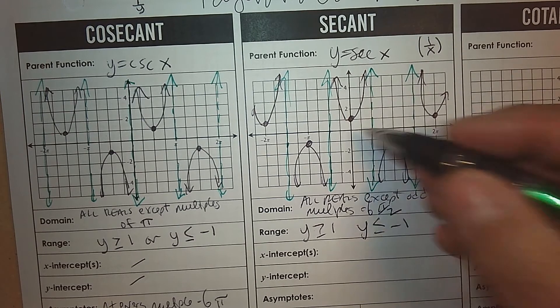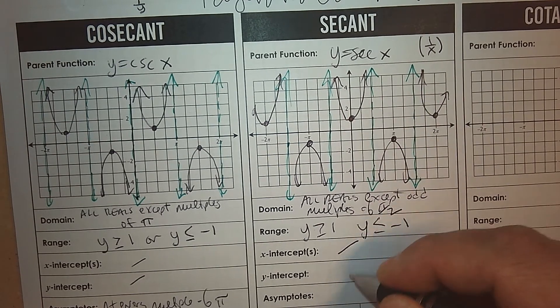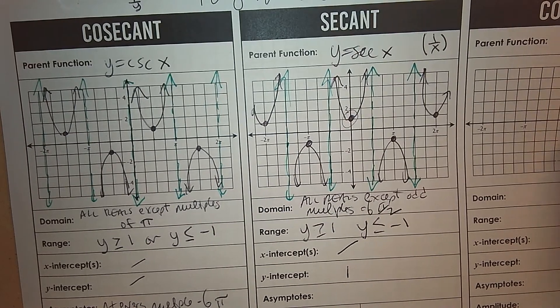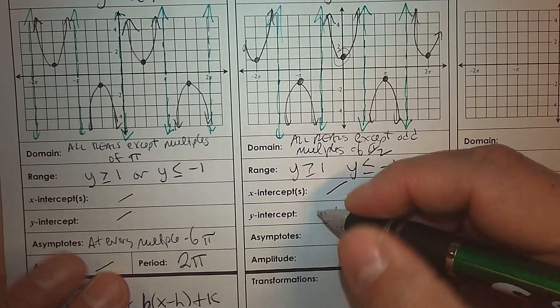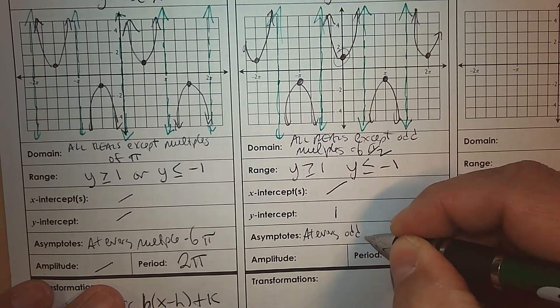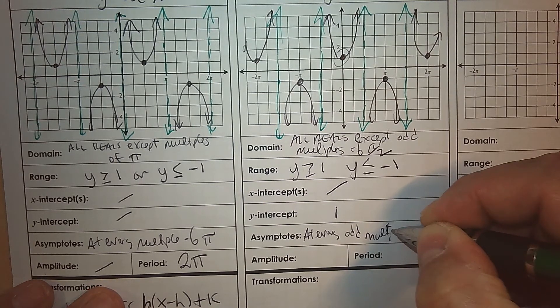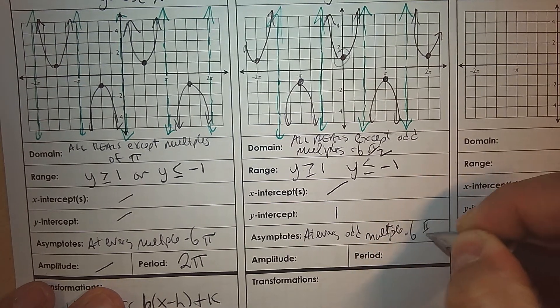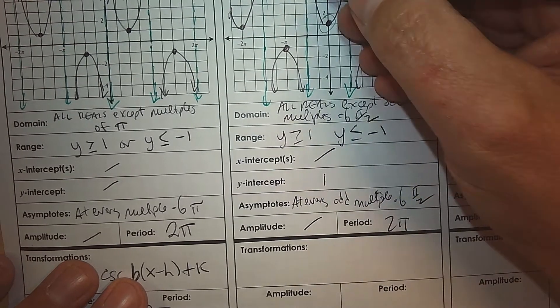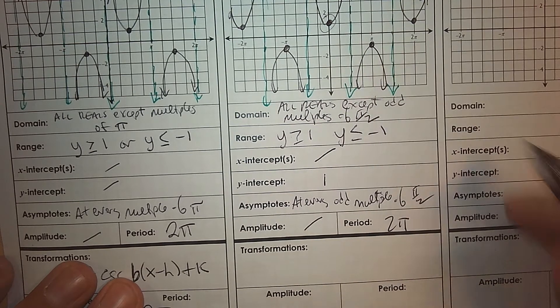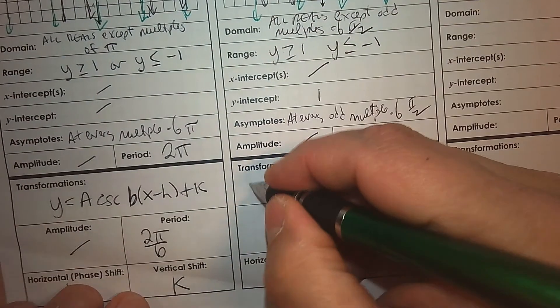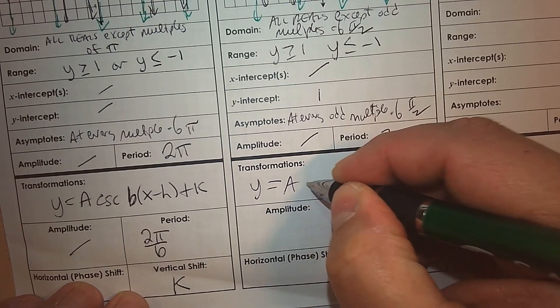This does have, it has no x-intercept, but does have a y-intercept at positive 1 right here. So it does cross the y-axis. Asymptotes. It's at every odd multiple of pi over 2. There's no amplitude. The period, again, is 2 pi. So one parabola up, one parabola down. That finishes one cycle.